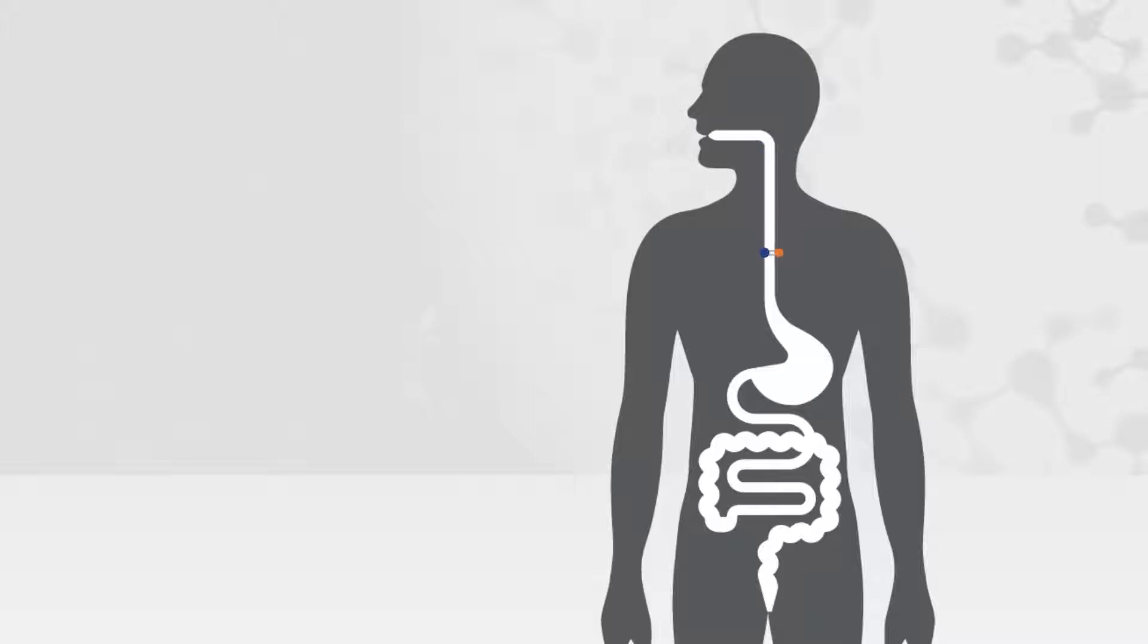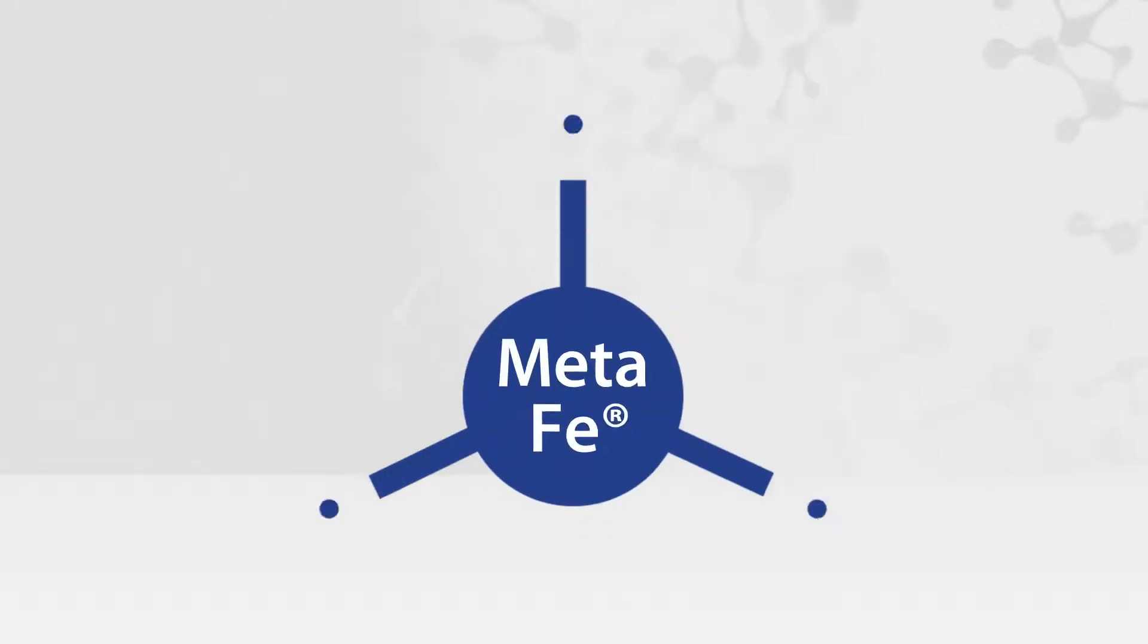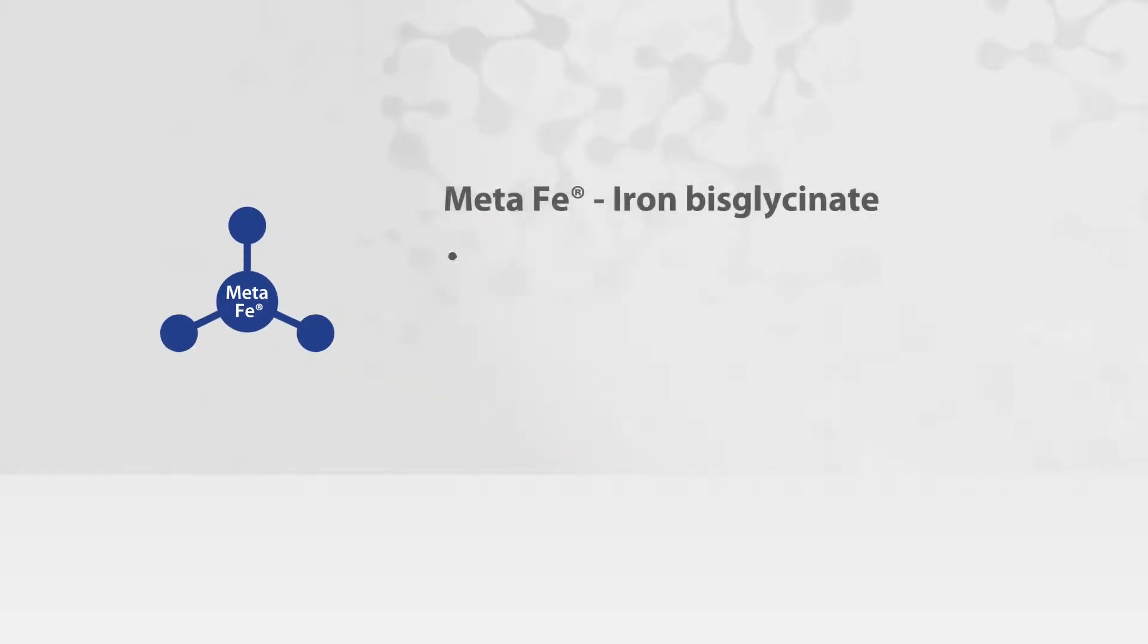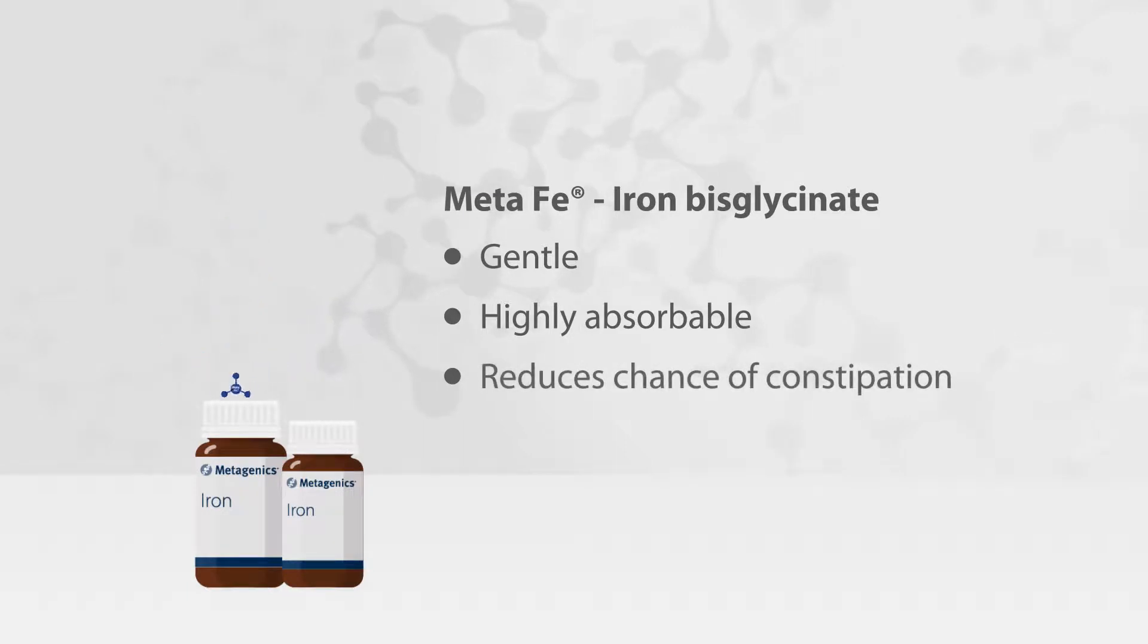Certain forms of iron commonly cause unwanted effects such as constipation. Meta-iron iron bisglycinate is a gentle and highly absorbable form of iron which may reduce the chance of constipation occurring.